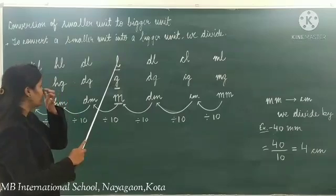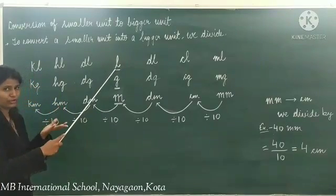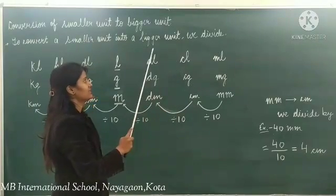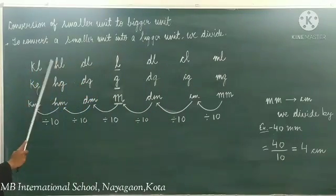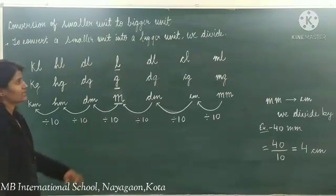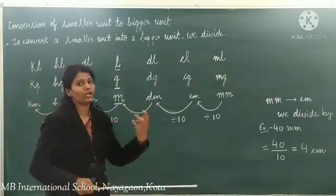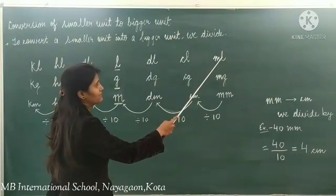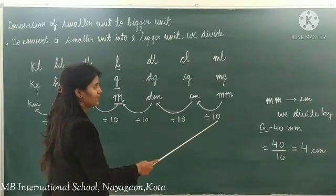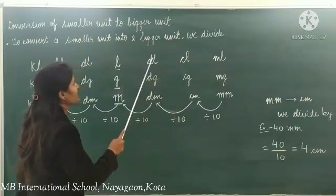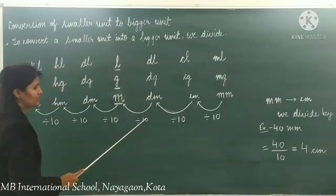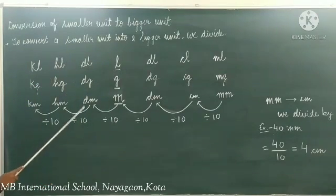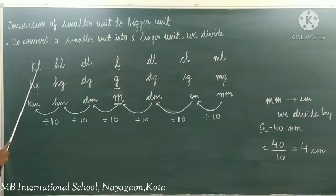Liter is the basic unit of volume. Milliliter is the smallest unit. The hierarchy is: milliliter, centiliter, deciliter, liter, decaliter, hectoliter, and kiloliter. For conversion from smaller to bigger unit, we divide by 10 at each step: milliliter to centiliter ÷10, centiliter to deciliter ÷10, deciliter to liter ÷10, liter to decaliter ÷10, decaliter to hectoliter ÷10, hectoliter to kiloliter ÷10.